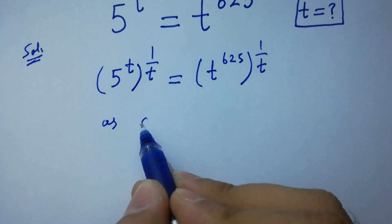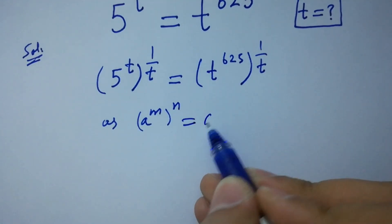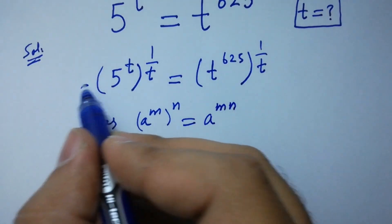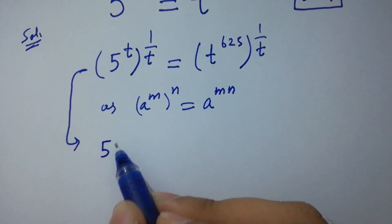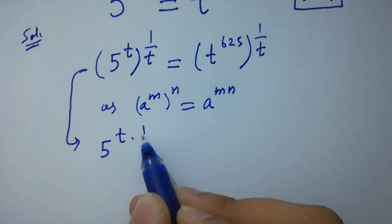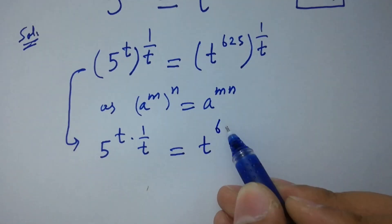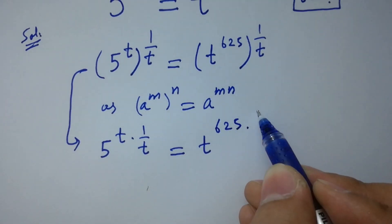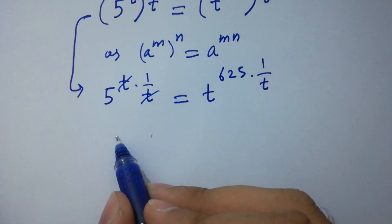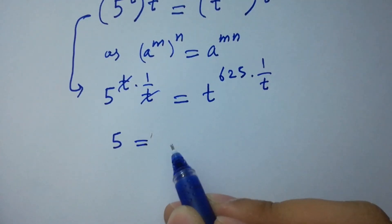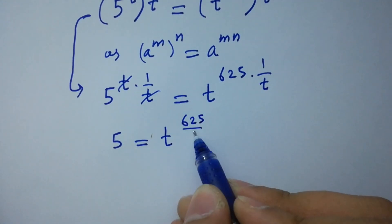Using the rule that a to the power m, to the whole power n, equals a to the power m times n, it becomes 5 to the power t times 1 over t, equals t to the power 625 times 1 over t. Since t and t cancel, we have 5 equal to t to the power 625 over t.